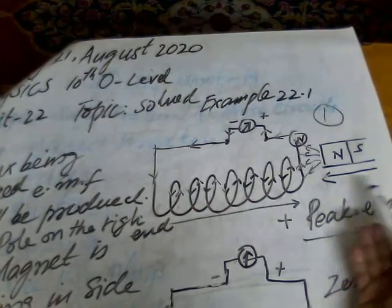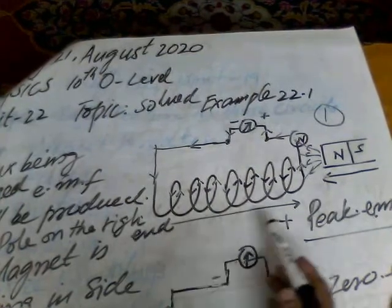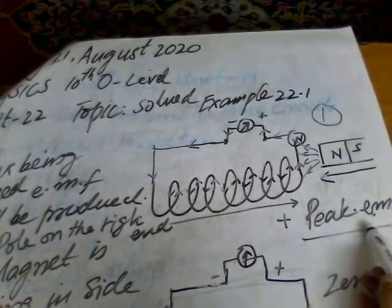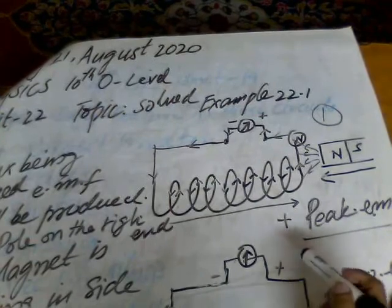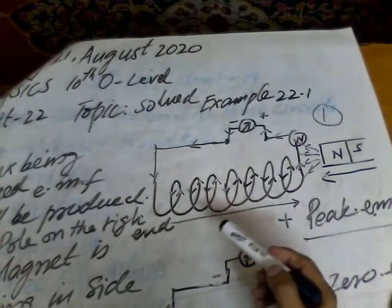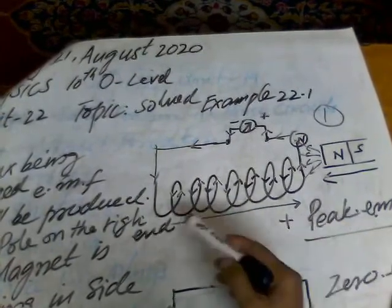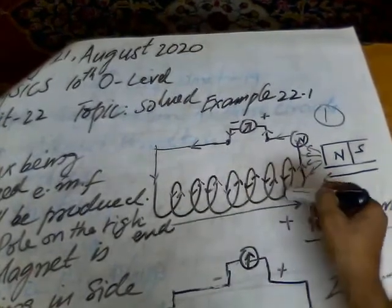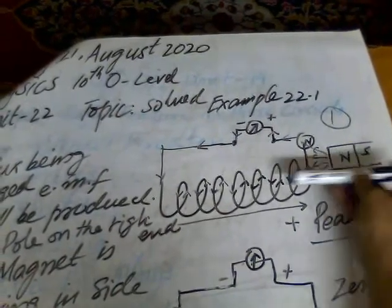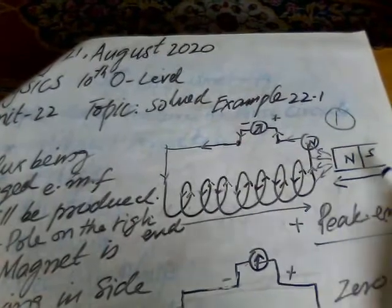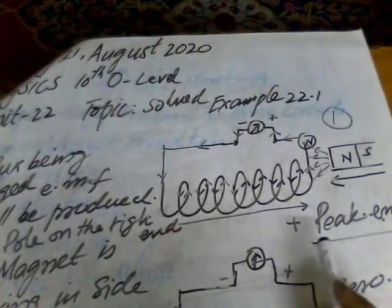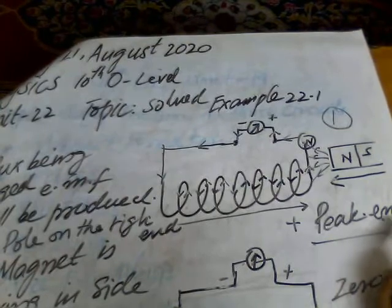The magnet is moving from right to left, and the current is moving from left to right. Here, the peak EMF will be produced. We have already studied how we can improve the value of EMF: by increasing the strength of the magnet, by increasing the number of turns of the coil, and by increasing the relative motion of the magnet. If the magnet is moved very fast, the positive peak of the EMF will be produced.